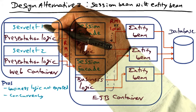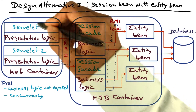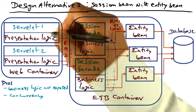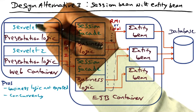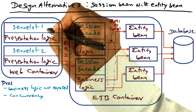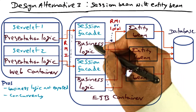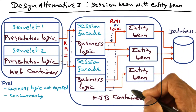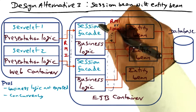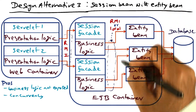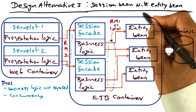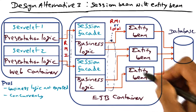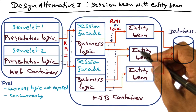As in the first design, the web container contains only the servlet and the presentation logic that is associated with that particular servlet. Now the business logic is moved back into the EJB container and it sits with the session facade. We still have the data access objects implemented using the entity bean concept mentioned in the second design alternative.